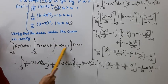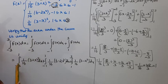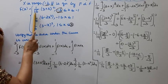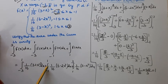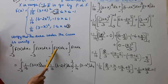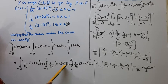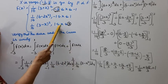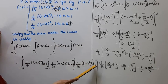Writing out each part: integral from -3 to -1 of (1/16)(3 + x)² dx, plus integral from -1 to 1 of (1/16)(6 - 2x)² dx, plus integral from 1 to 3 of (1/16)(3 - x)² dx.